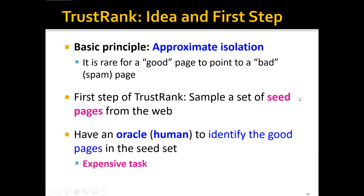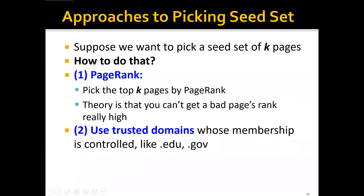The first step of TrustRank is to sample a set of seed pages from the web. We can have an oracle or human to identify the good pages in the seed set. You may have noticed that this is actually a very expensive task. Suppose we want to pick a seed set of K pages — how do we do that?